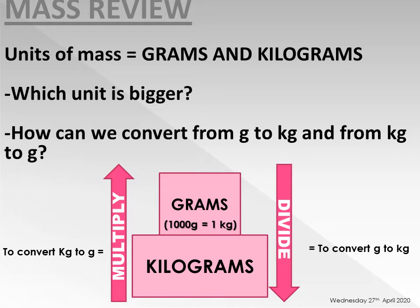Divide by 1000 and multiply by 1000. So if I say convert gram to kilogram - small units to big units - you divide by 1000. What about convert kilogram to gram? You multiply by 1000.